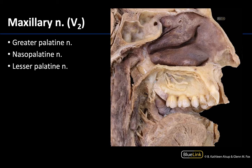The hard palate is going to be afferently innervated by the greater palatine nerve, or GP, more posteriorly — it enters the region through the greater palatine foramen. The more anterior portions are afferently innervated by the nasopalatine nerve, which traverses this region via the incisive foramen. The lesser palatine nerve will afferently serve the soft palate, and these are easiest to locate from the soft palate region heading towards the lesser palatine foramina, of which there are usually multiple.